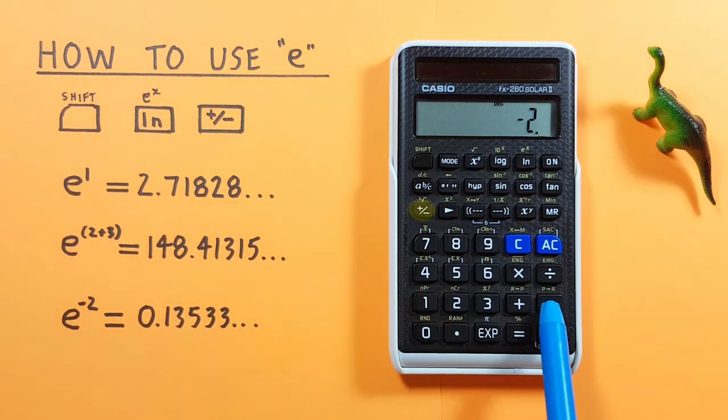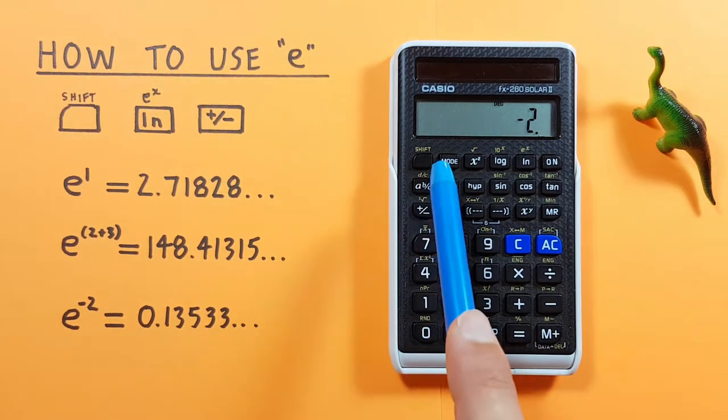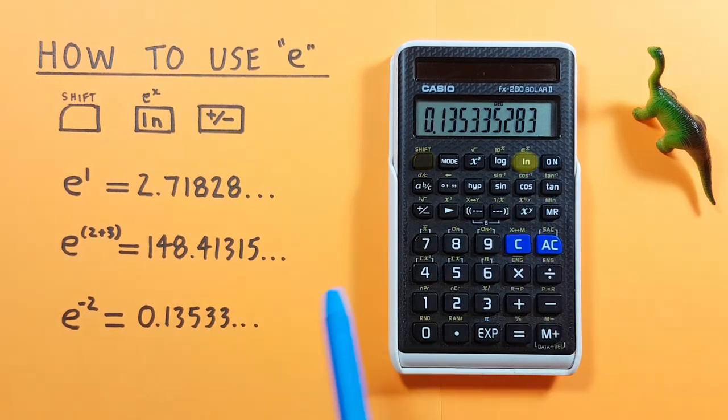Note that we're not using the subtraction key because that will give us a different result. We're using this one, and then we go shift ln, and we get a result of 0.13533 etc.